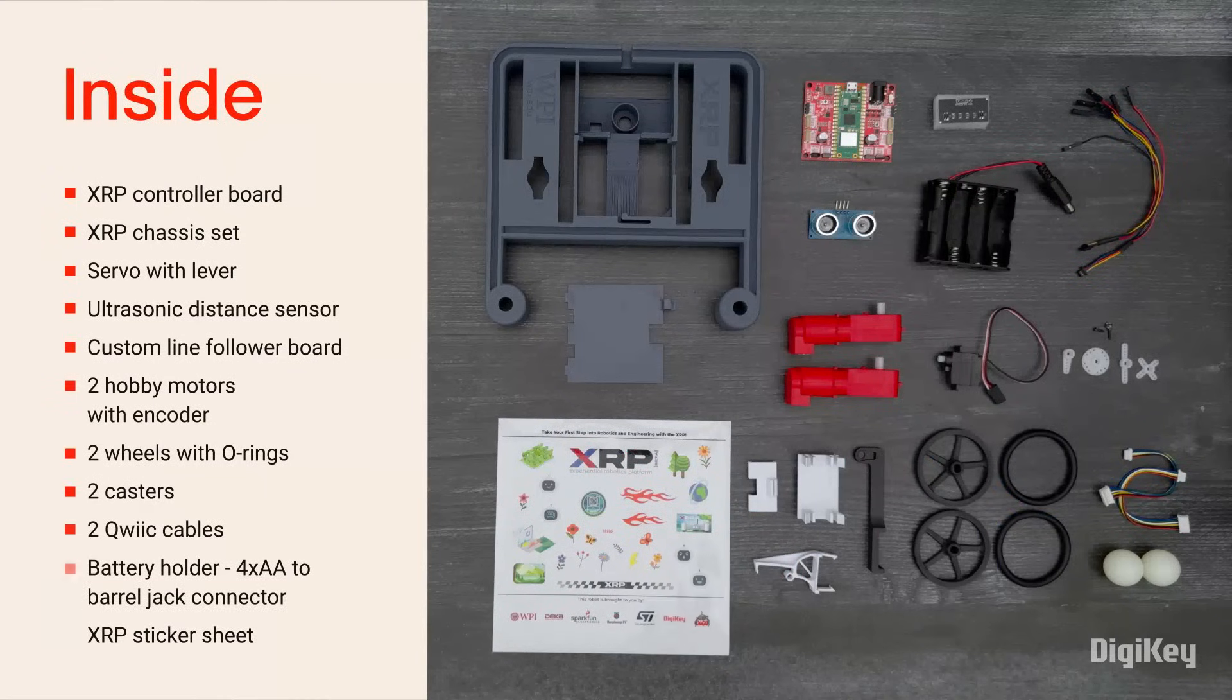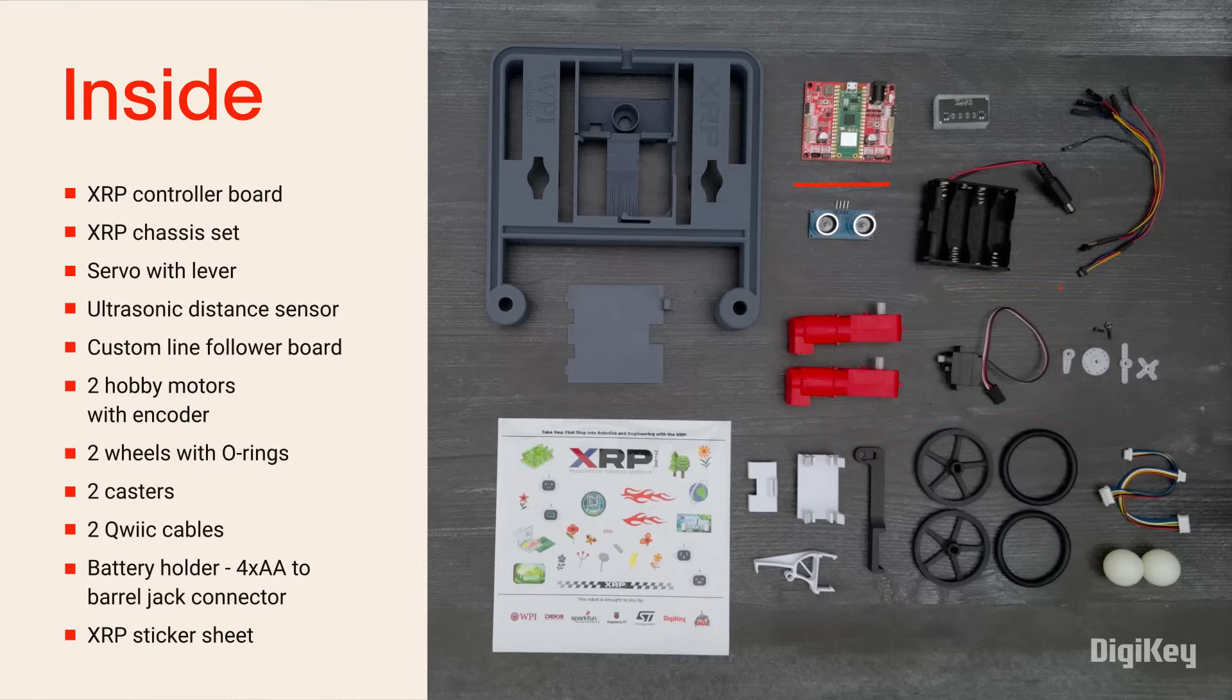Inside the box, you'll find the XRP controller board, the chassis with attachment hardware, one servo with a servo arm, an ultrasonic distance sensor, a custom line follower board, two motors with encoder, wheels with O-rings, two casters, and two quick cables.